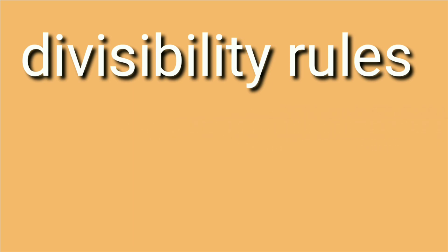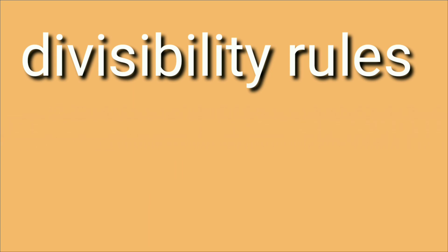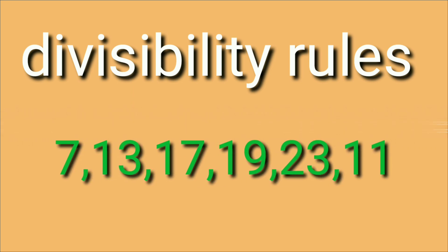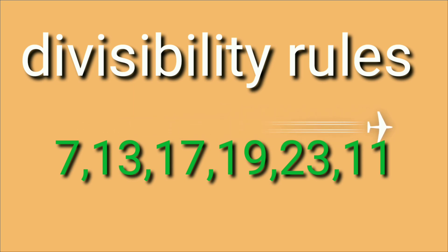What is special? We have 10 multiples of these numbers. If you multiply the numbers, the answer is divisible. This is very special. These are the numbers 7, 13, 17, 19, 23, and 11. There are plenty of numbers. We are going to talk about divisibility rules.